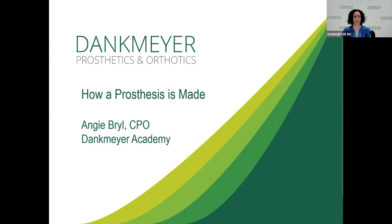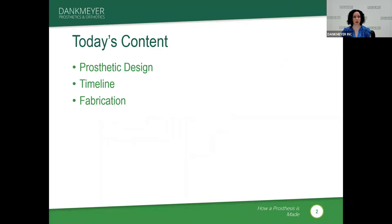So without further ado, we'll jump right in. Today's content will cover three main things. First, we'll talk generally about prosthetic design, because each prosthesis is unique to the individual. We do not have a shelf of prostheses that we pull one off for a patient — everyone is specifically and custom-made. We'll also give you a timeline to expect for general prosthetic provision, as well as an insider look at the fabrication process.